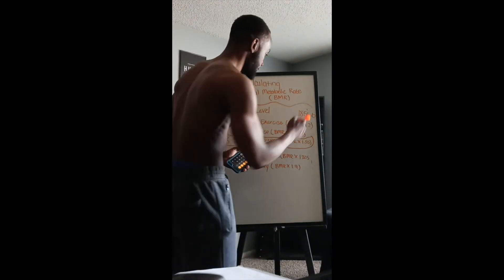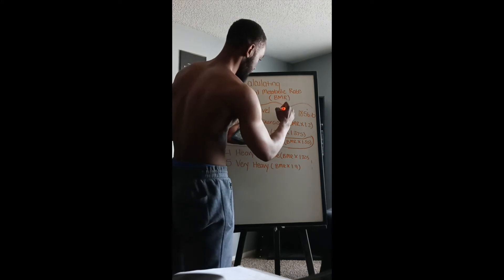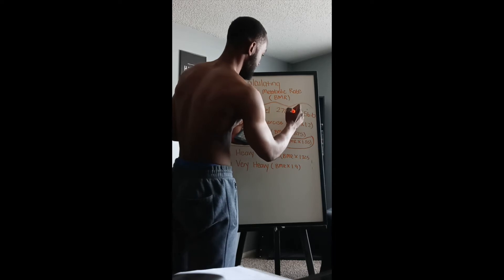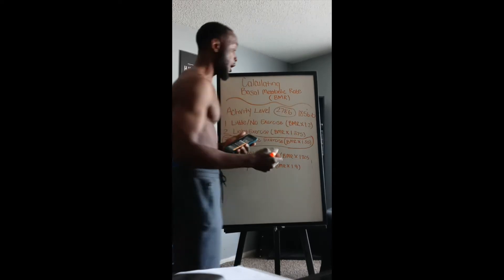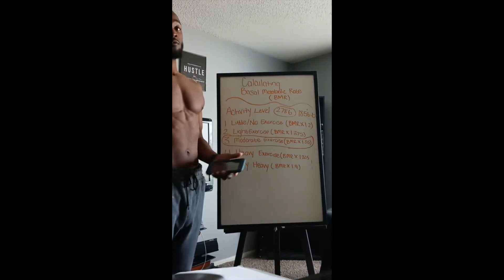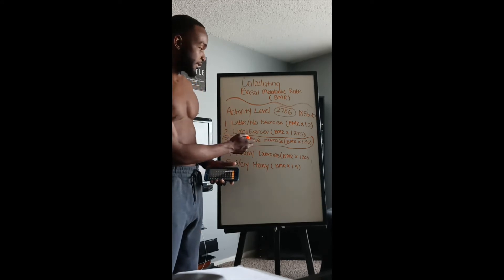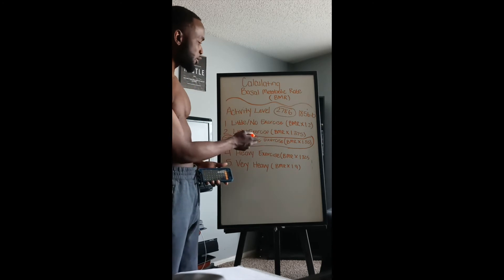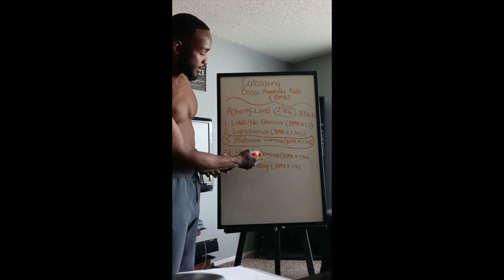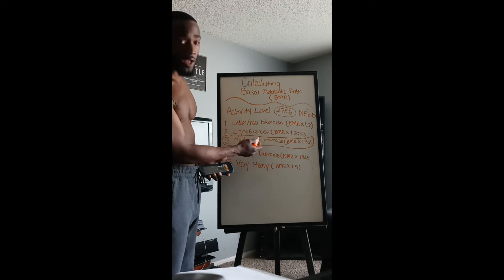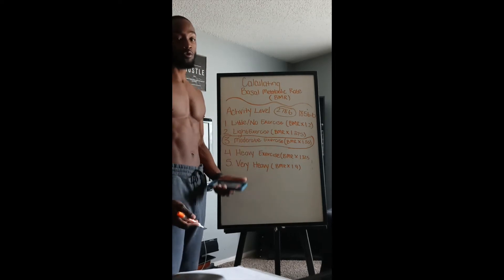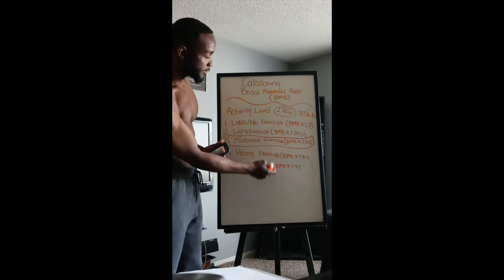So 2,786 — let's round it up to 2,786 — is the total amount of calories I would need based on my activity level, which is roughly three to five times working out a week. If you don't work out that much, use a lower multiplier. If you work out more than that, or have a physical job like construction where you use a lot of energy, you would use the higher multipliers.